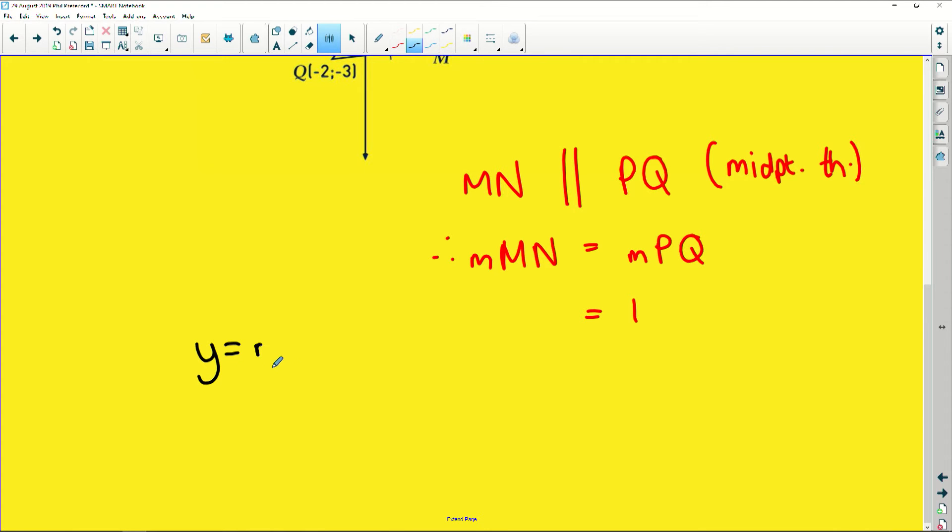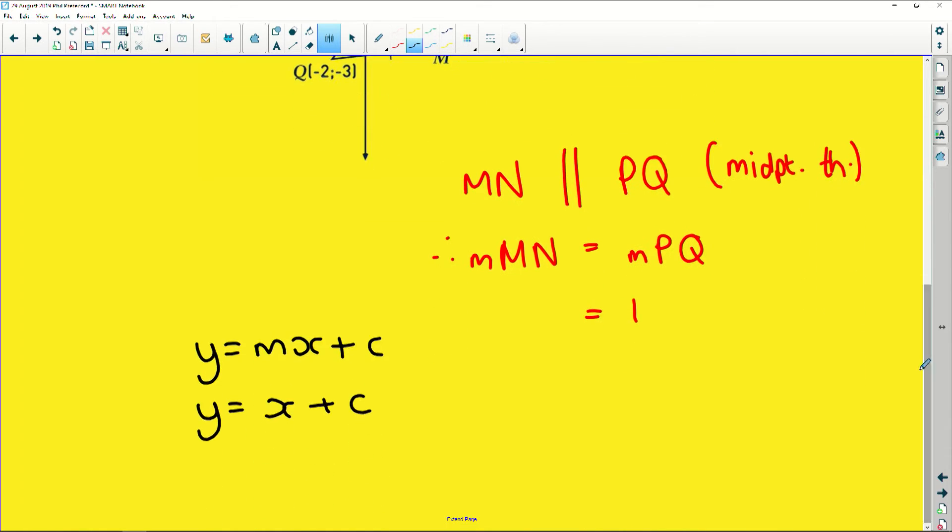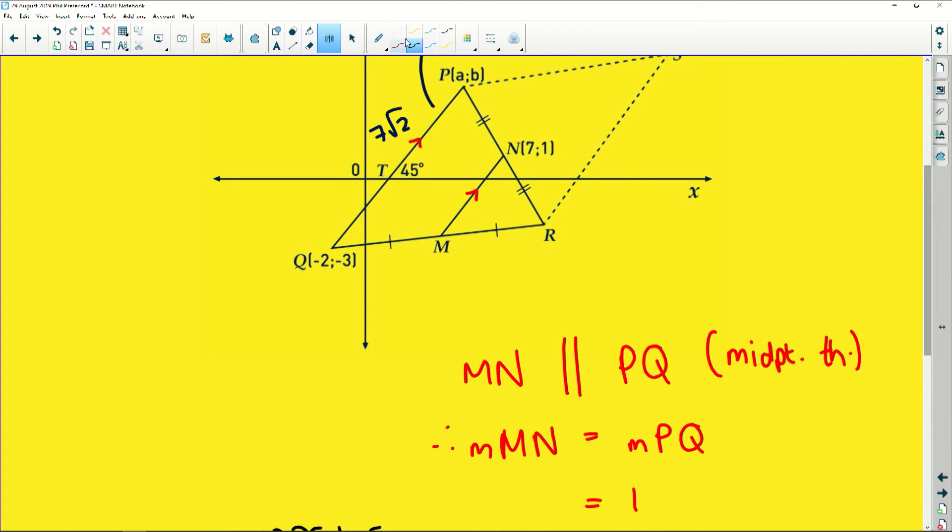We're trying to find the equation of MN in this format. So we know that Y is equal to just X plus C because that M equals 1. Now, easy peasy, grade 9 straight line work. Find a point and substitute it in there. So Y value is 1, X value is 7, and plus C. So if we solve for C, subtract 7 from both sides, 1 minus 7 is negative 6. So our equation of MN is Y is equal to X minus 6. And that makes perfect sense because remember that negative 6 is the x-intercept. If we follow this line, it's going to go down here and intersect somewhere there, and that will be that negative 6.